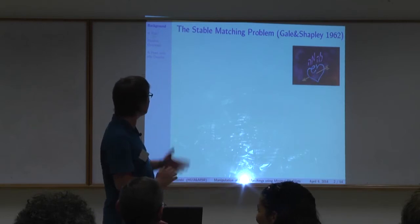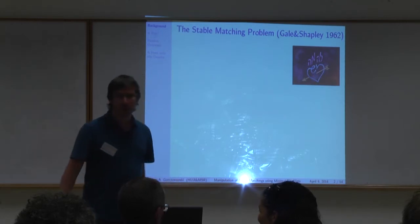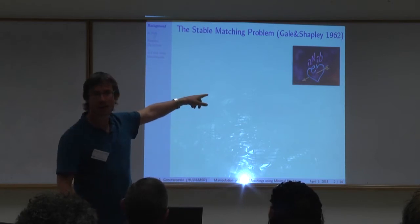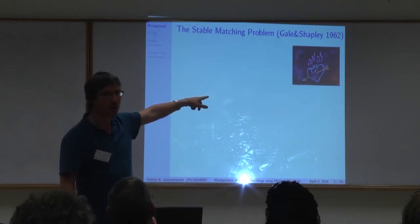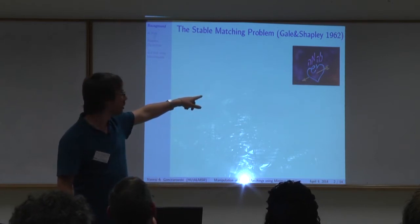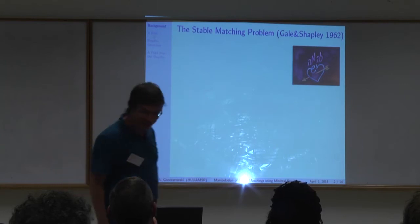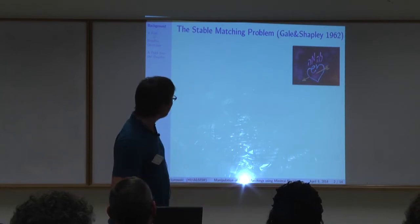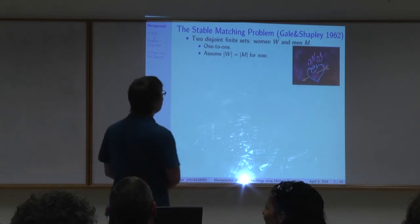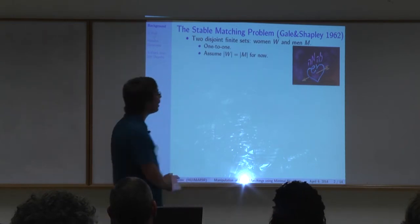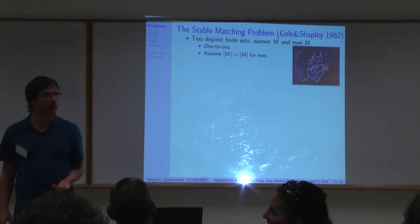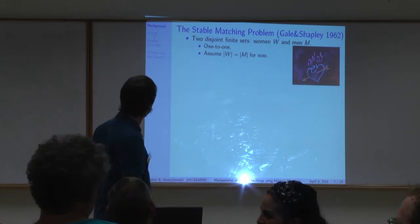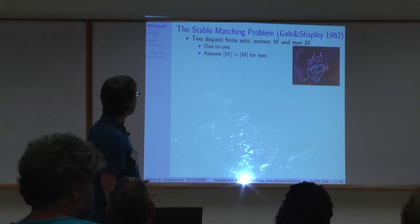Let's quickly recap the stable matching problem. This is an age test, by the way, for all students here — I really hope there's no teacher who doesn't know it. In 1962, Gale and Shapley presented a problem and solved it. Actually, Gale presented it and Shapley solved it.